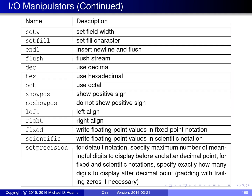Here is a list of IO manipulators for controlling output. setw sets the field width — the width of the field in which data is printed. setfill sets the fill character used to pad extra space when data is smaller than the field width; typically a space, but it can be changed. endl prints a newline and flushes the output stream. flush just flushes the output stream. dec, hex, and oct control the number base for numerical output: dec for decimal, hex for hexadecimal, and oct for octal.